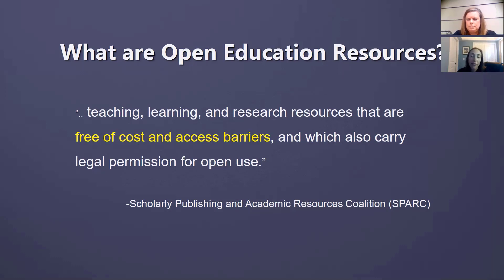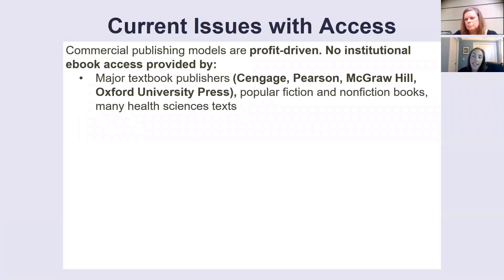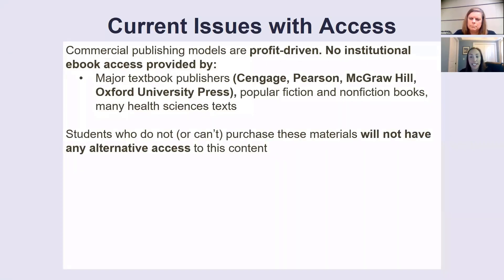I'd like to focus on the free of costs and access barriers part of this definition. Our current issues with access have to do with how commercial publishing models are designed for profit, not for enabling student access. Institutional e-book access is not provided by major publishers such as Cengage, Pearson, McGraw-Hill, and Oxford University Press. We also have trouble getting institutional access to some popular fiction and non-fiction, as well as many health sciences texts. Students who do not or can't purchase these materials will not have any alternative access to this content.